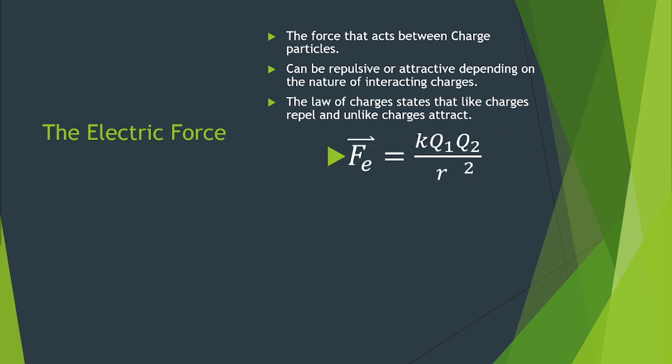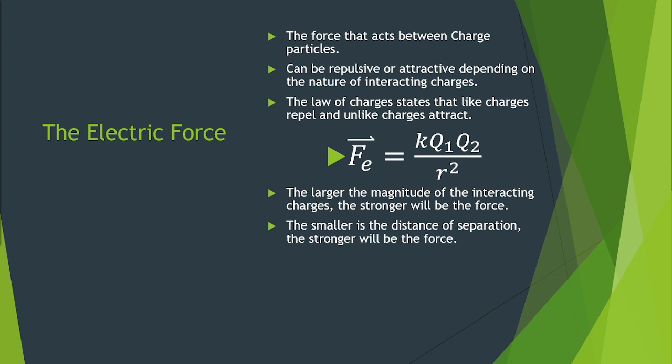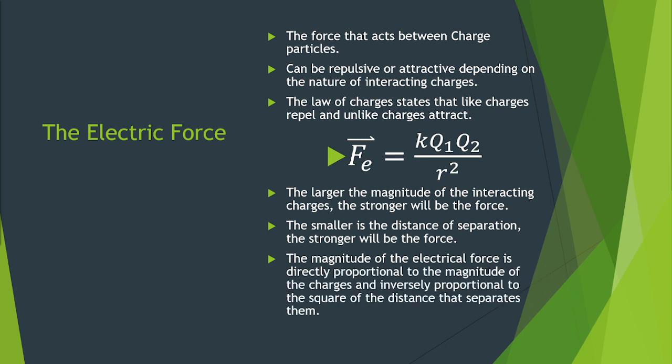The law of charges states that like charges repel and unlike charges attract. This force is calculated using the formula F sub E is equal to the products of constant K times the magnitude of charge sub 1 and magnitude of charge sub 2, divided by R raised to the power of 2. This formula or law tells us that the larger the magnitude of the interacting charges, the stronger the force will be. The smaller is the distance of separation, the stronger will be the force. The magnitude of the electrical force is directly proportional to the magnitude of the charges and inversely proportional to the square of the distance that separates them.